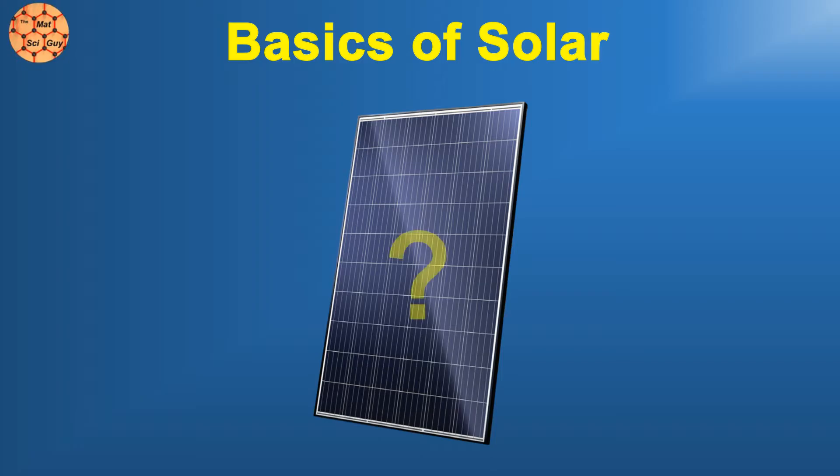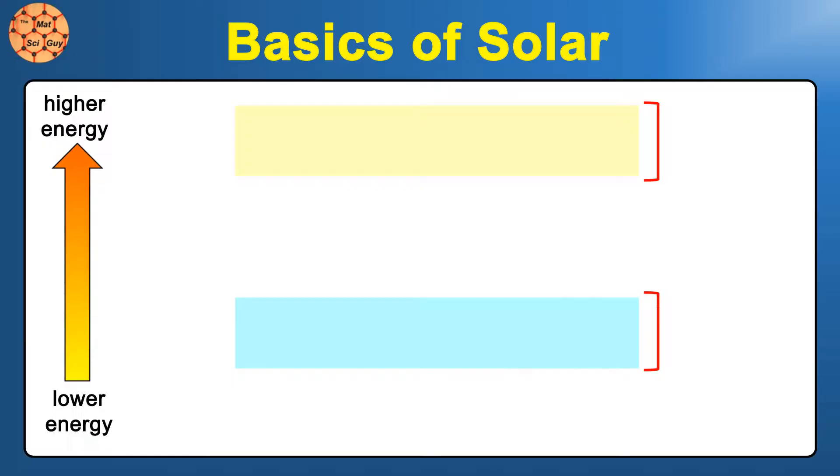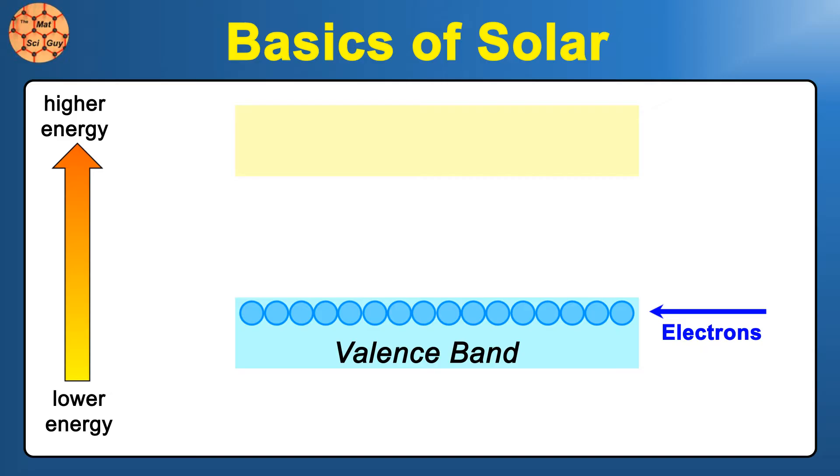To understand why silicon dominates the solar industry, we need a bit of background on how photovoltaic solar actually works. In semiconductors, electrons have certain energy ranges of states that are allowable, called bands. The lower band, called the valence band, tends to be mostly occupied with electrons, while the upper band, called the conduction band, tends to be mostly empty. The space in the middle where electrons can't occupy is called the band gap.